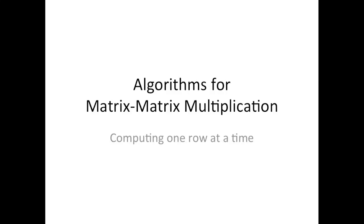Let's continue our examination of different algorithms for computing matrix-matrix multiplication. This time we're going to look at how C can be computed one row at a time. Recall how the i,j entry of C is computed as the dot product of the current row of A with the current column of B.